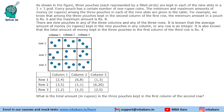We have a total of 27 pouches and each pouch has a certain number of one rupee coins. The minimum and maximum amounts of money among the three pouches in each of the nine slots are given in the table.